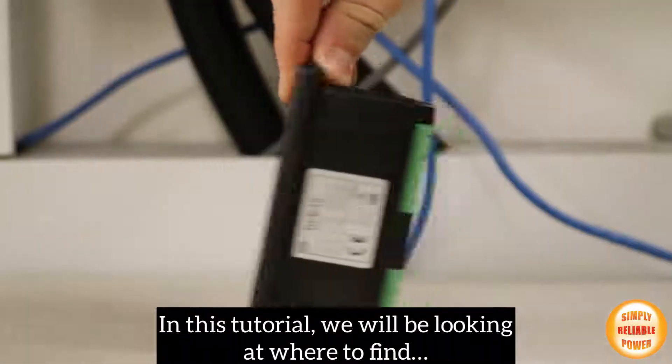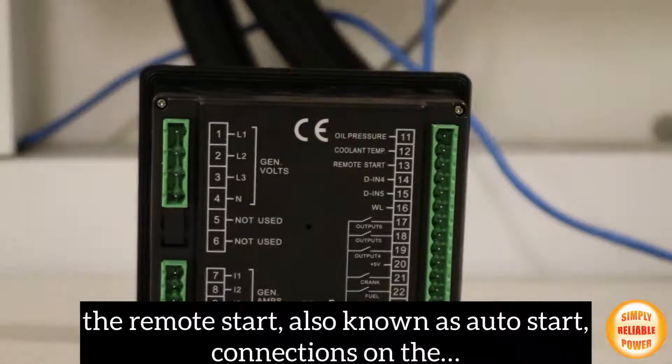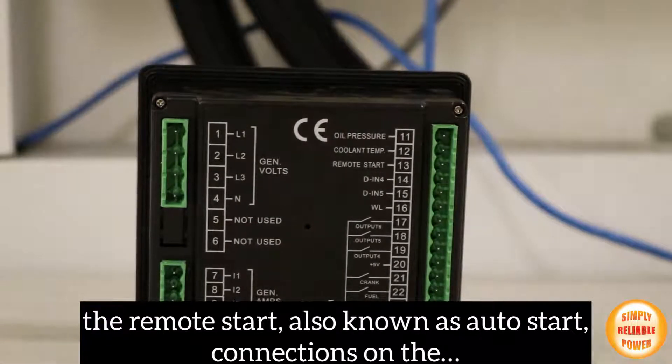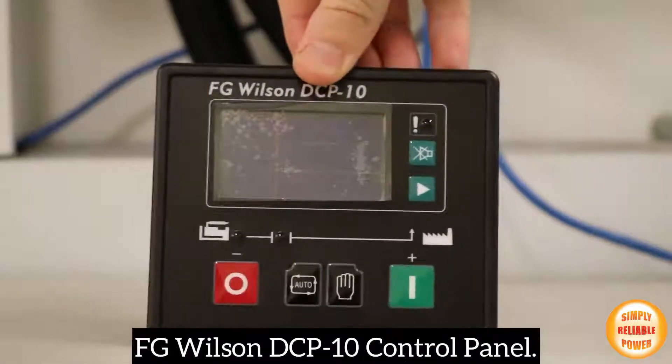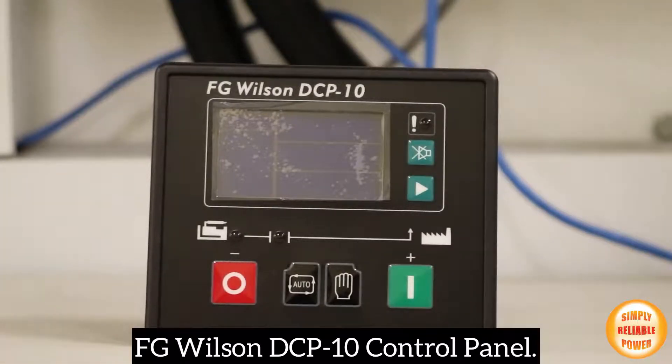In this tutorial, we will be looking at where to find the remote start, also known as auto start, connections on the FGWilson DCP10 control panel.